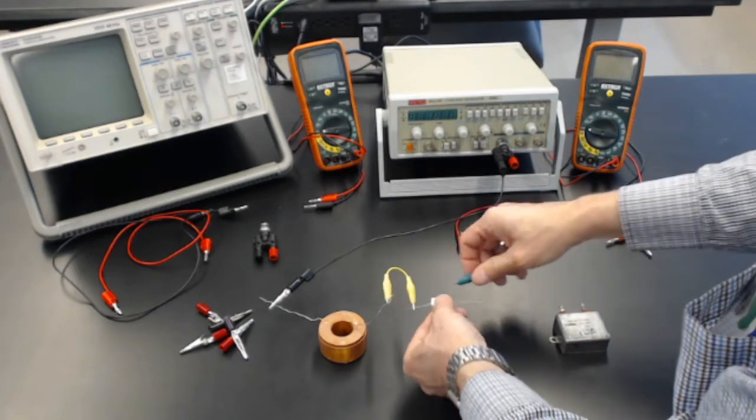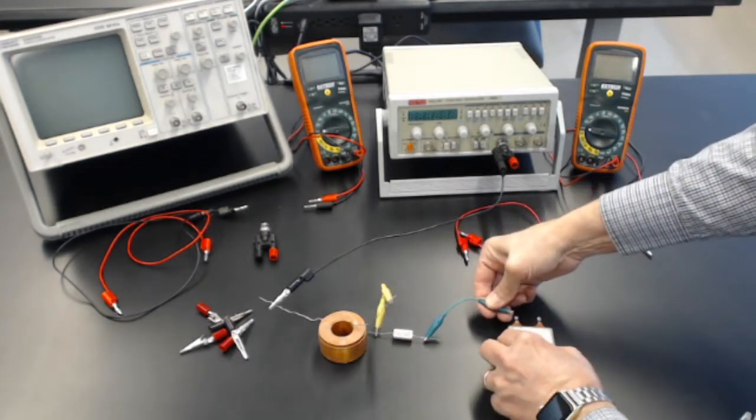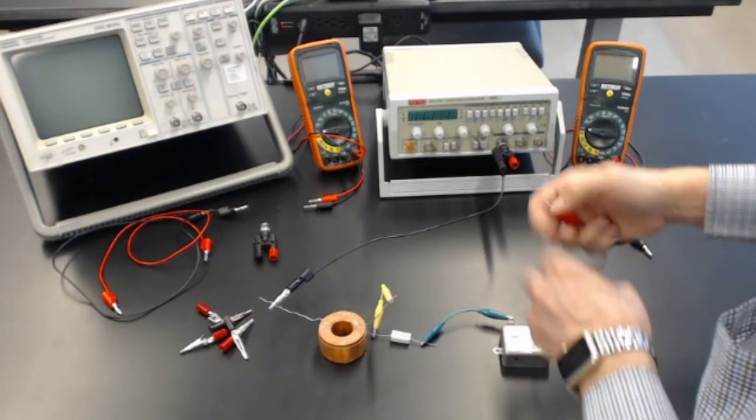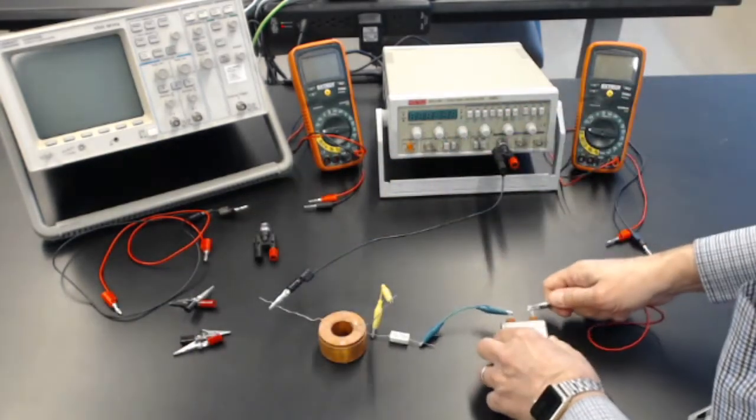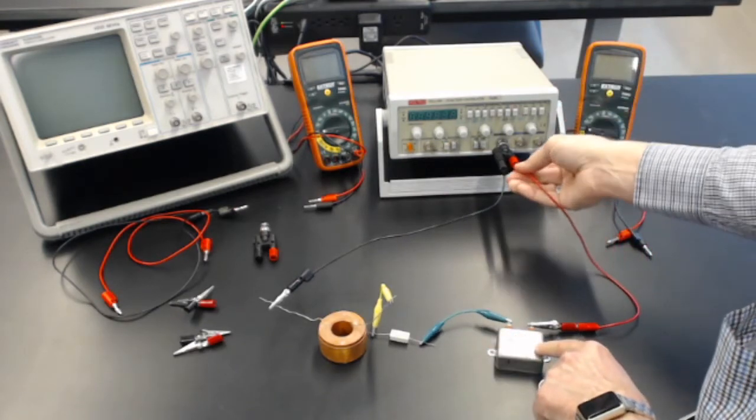And coming out the other end of the resistor, I'll go over to the capacitor. And then coming back, another alligator clip to grab onto the capacitor and go back to the function generator.